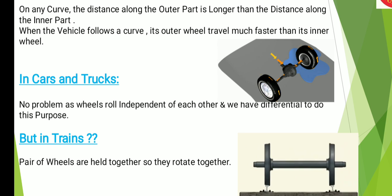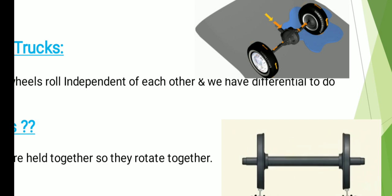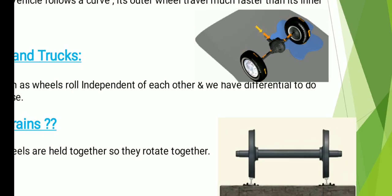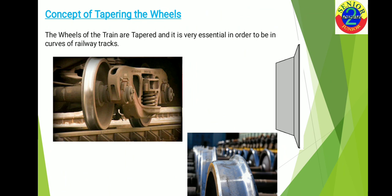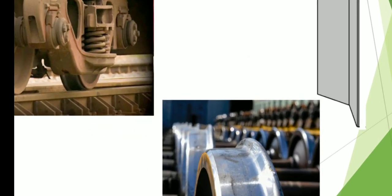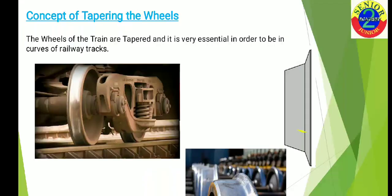In trains, a pair of wheels are held together and they rotate together. For those who have not taken a close look at train wheels, next time whenever you travel, please have a look at them. Now, I have brought our railway wheels here. There is a special design in railway wheels — they are tapered. When going outward, the diameter keeps on decreasing. So basically the wheel design is tapered wheels.